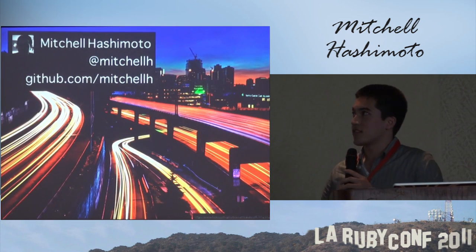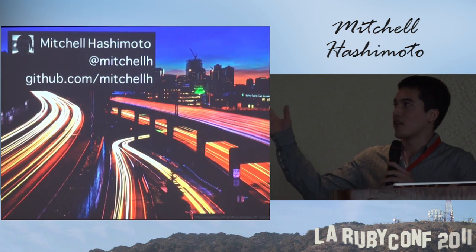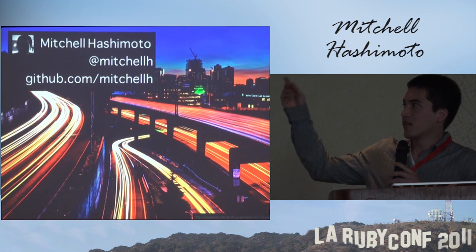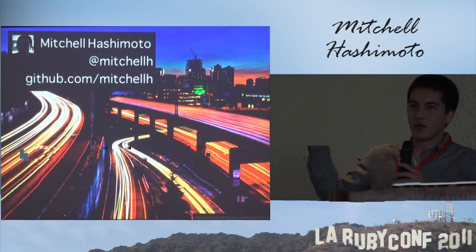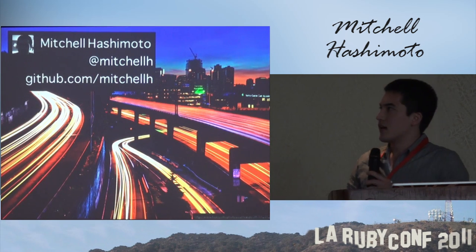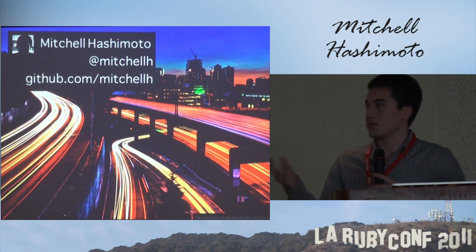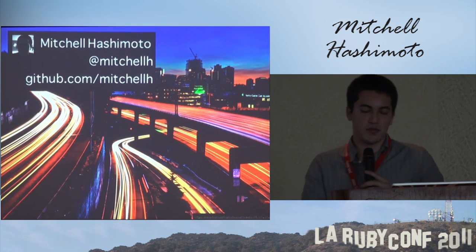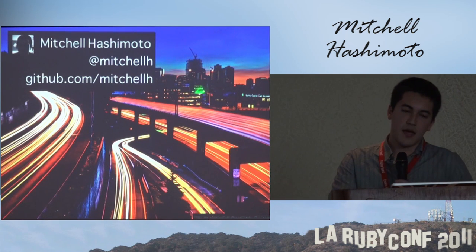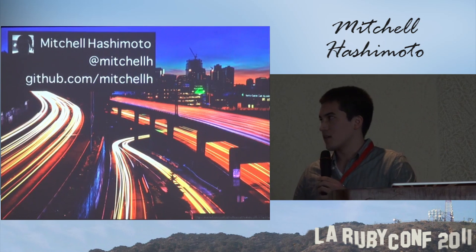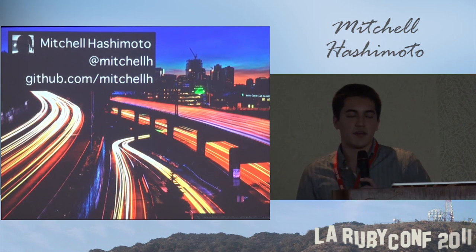I'm Mitchell Hashimoto - that's the avatar I use everywhere. My handle is MitchellH everywhere: that's my Twitter handle, GitHub. That's my homepage, GitHub. I live in Seattle, Washington right now - that's the background image here - but I fly down here all the time.